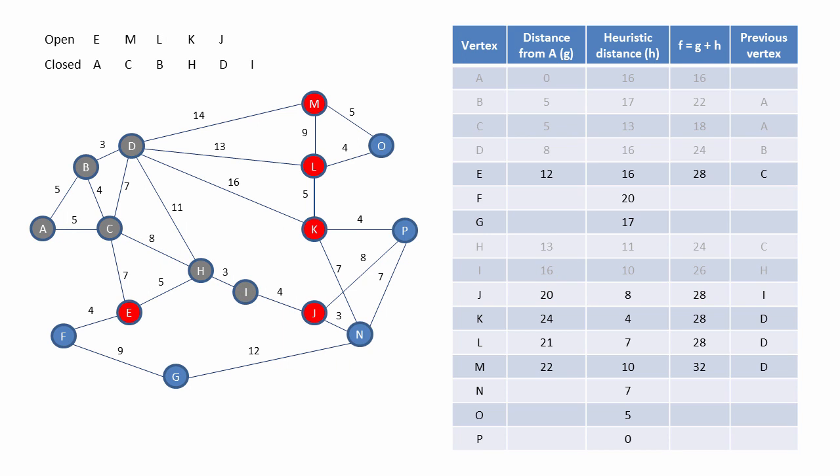Now at this stage, we could choose any one of four vertices to be the next current vertex. They all have the same F value. We can see from the pattern of red vertices on the graph how the frontier has expanded so far. The next decision will either expand it further or get us to where we want to be. For no particular reason, let's choose J to be the next current vertex. There are two vertices to open, and one of them is our destination, P, the one with the lowest F value. So we've found the shortest path. Our search is over.